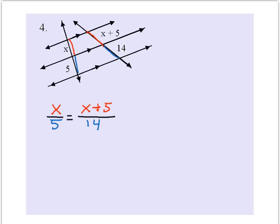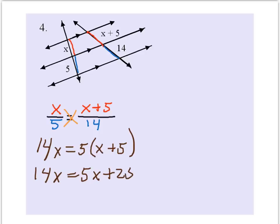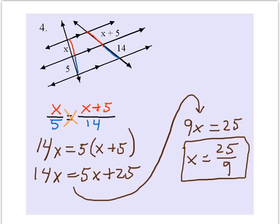Let's cross-multiply. 14x is equal to 5 times x plus 5. Distribute. And then solving gives us that x is equal to 25 ninths.